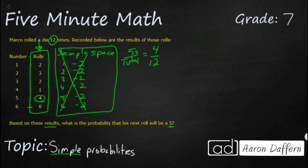Obviously, we're going to simplify this. Let's go ahead and divide both of these by 4, and we're going to get 1 third. So this is our probability that he would get a 5 next time — 1/3 rather than 1/6, which is what we would get if we were looking at our sample space. He's going to end up with a 1/3 probability simply because he rolled a lot of 5s the first time.